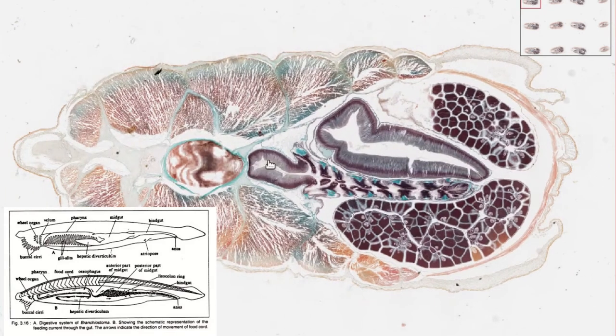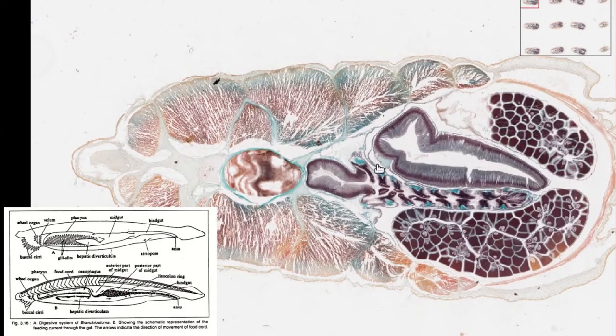So here, this is also a cranial section, but perhaps it's a little further back. The hepatic diverticulum is a little bit wider. And that's the only clue, really, that it's from more caudally.